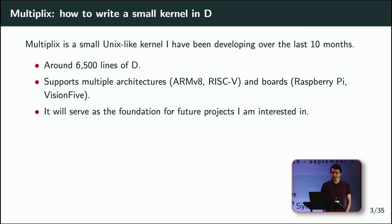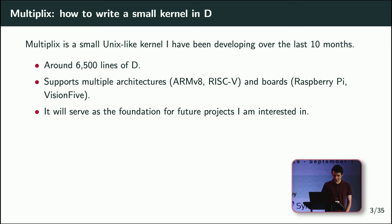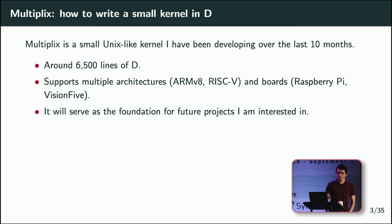A little overview of Multiplex: it's a small Unix-like kernel I've been working on for basically the past year. It's around 6,500 lines of D. It supports a couple of different boards — ARM and RISC-V — so it supports some Raspberry Pis, and there are also these VisionFive boards running RISC-V processors. I'm hoping to build on this kernel as a foundation for future research projects.